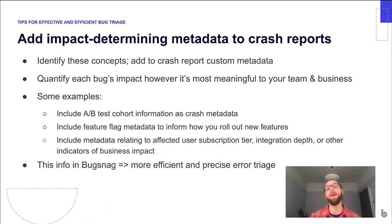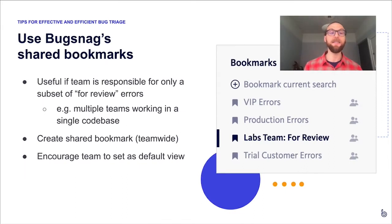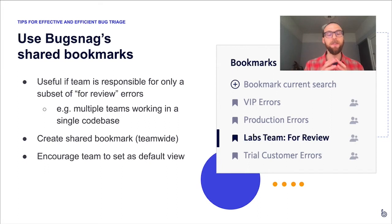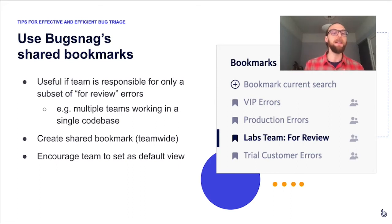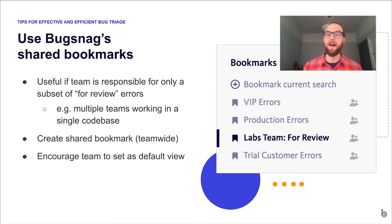That's going to allow for more efficient and precise error triage in BugSnag. The next tip is to consider using BugSnag's shared bookmarks feature. If you aren't familiar with shared bookmarks, this allows you to save a certain set of search criteria inside BugSnag — including sort criteria for the results — and makes it very easy to come back to that search later. You can also share these with members of your team, as shown in the screenshot where the multiple users icon indicates these are shared within the team.